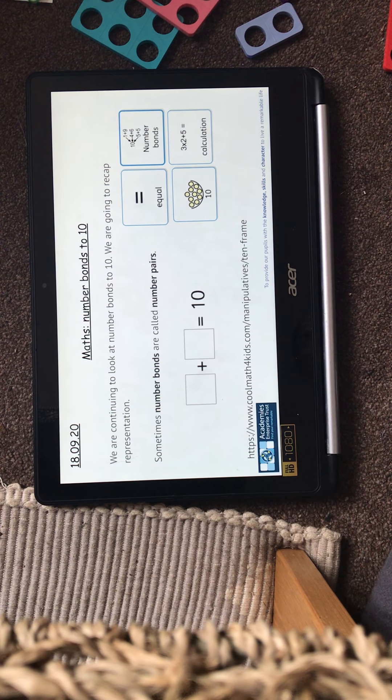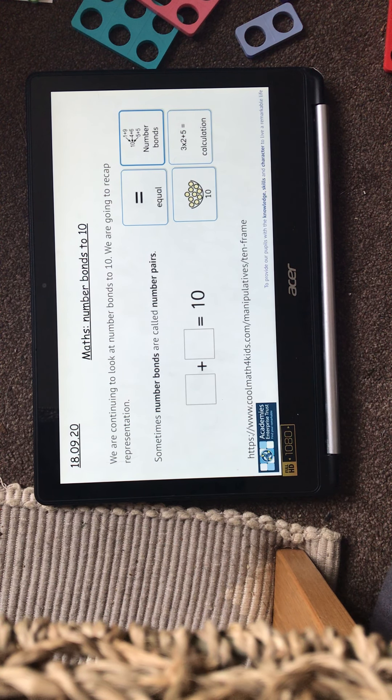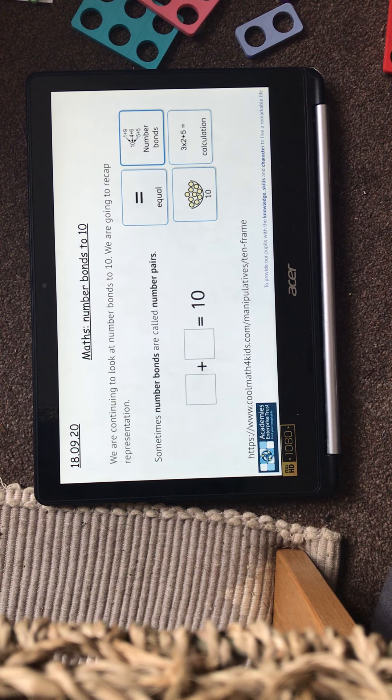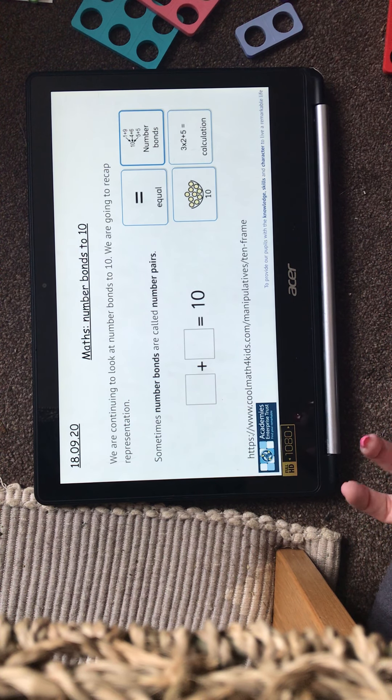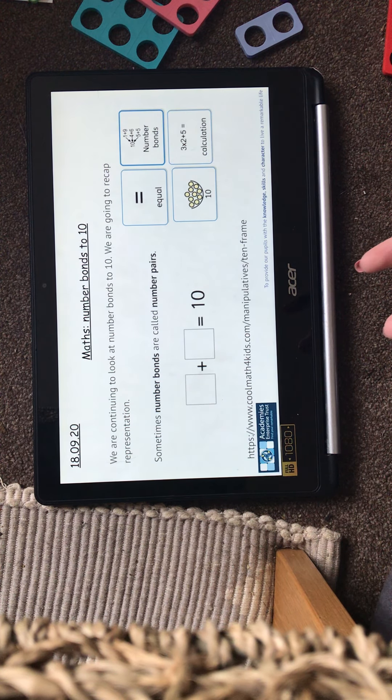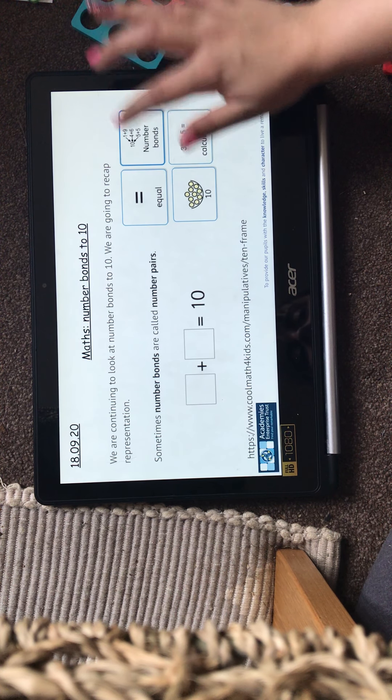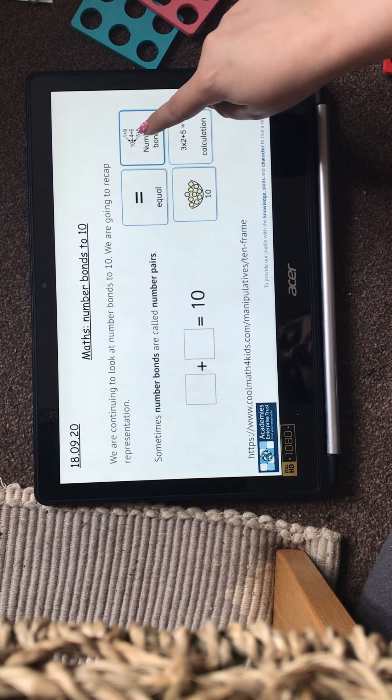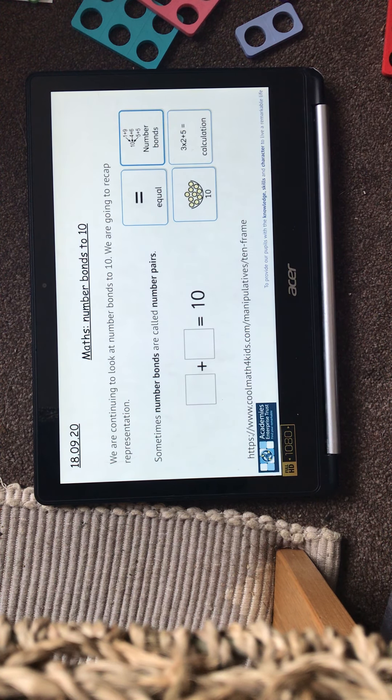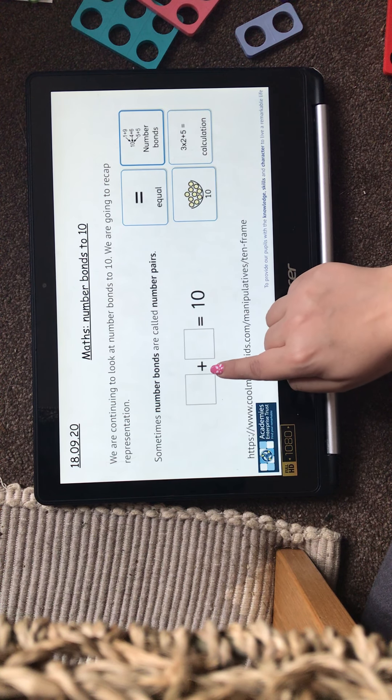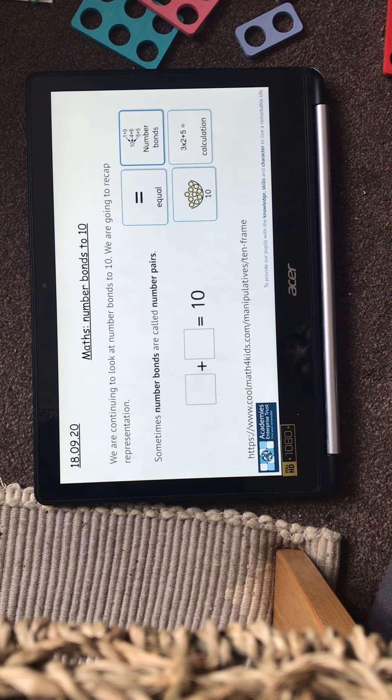Okay, for maths today we are going to continue to look at number bonds to 10. So we're going to recap our representation and look at our keywords, which is equal or equals. So we have an equal sign in our calculations. We are looking at number bonds, so that is two numbers that equal one number. 9 add 1 equals 10, 4 add 6 equals 10. 10 is our magic number today, and we're going to be writing calculations. We sometimes call them number pairs, and we sometimes call them number bonds.